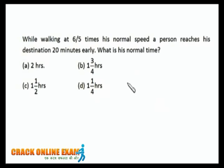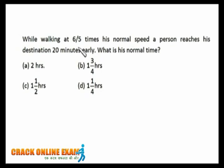Next case: while walking at six-fifths of his normal speed, a person reaches his destination 20 minutes early. What is his normal time? In the previous case the person reduced his speed; here he's increasing it. Since speed is inversely proportional to time, if speed is six-fifths of normal, time will be five-sixths of normal.